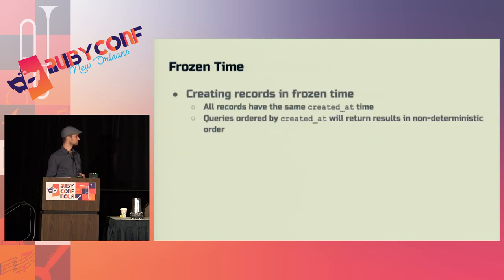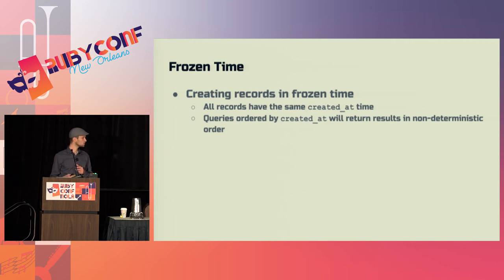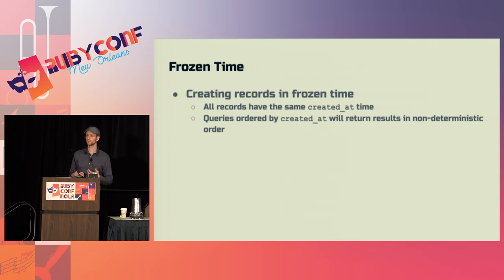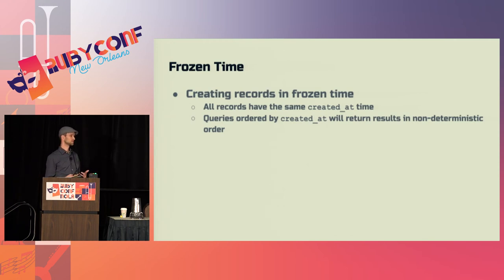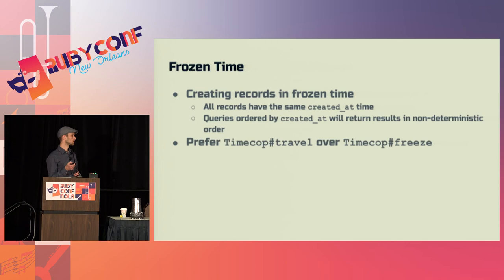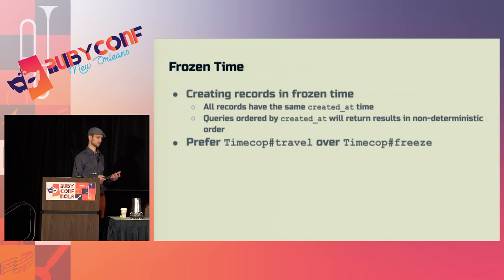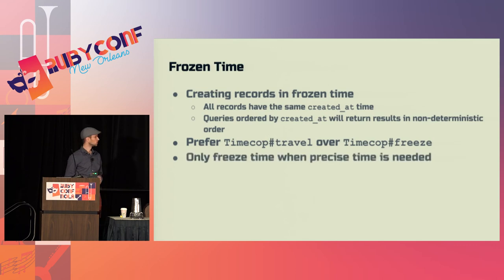Frozen time is a similar interesting issue. If you're using TimeCop or another gem and you're freezing time, all records created will have the same created_at. So if you perform a query ordered by created_at, the sort order is going to be non-deterministic because the creation time for all of them is exactly the same. We prefer time_cop.travel over time_cop.freeze — travel moves to the time you give it and time continues to roll forward, so records get different timestamps. Only freeze time when precise time is needed, which is almost never in my experience.